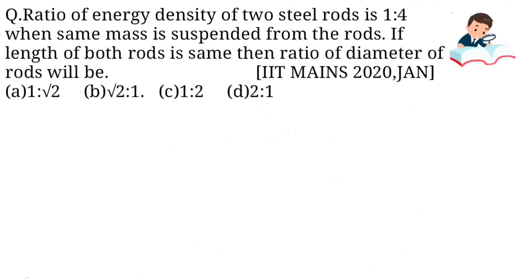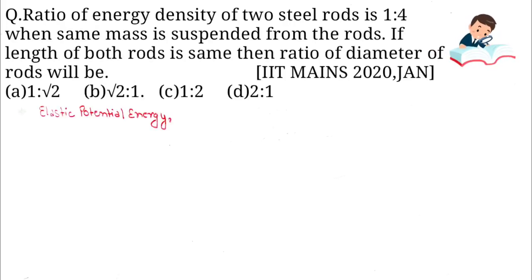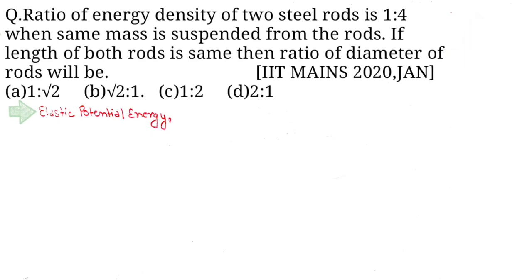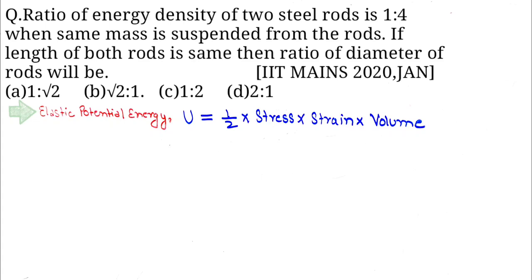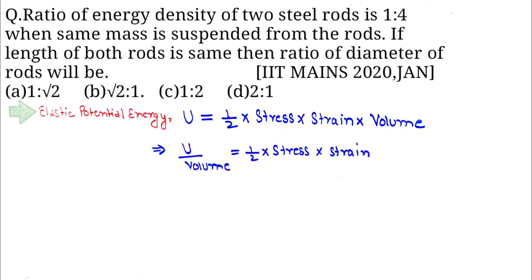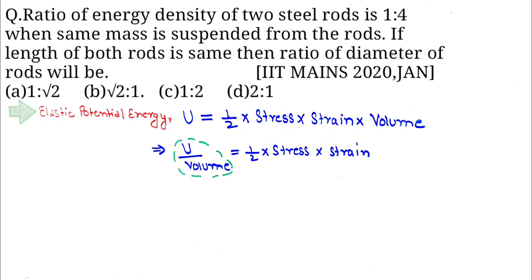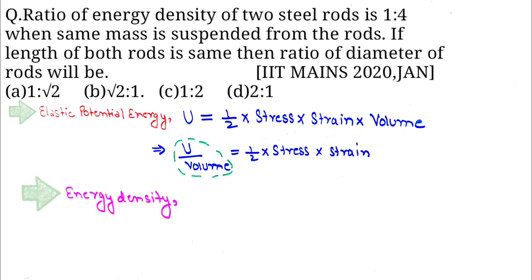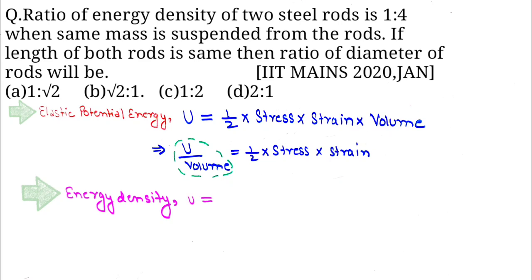Before we proceed to the solution for this question, you must know the formula of elastic potential energy. Elastic potential energy is equal to half into stress into strain into volume. This means that u by volume is equal to half into stress into strain. U by volume is called energy density.